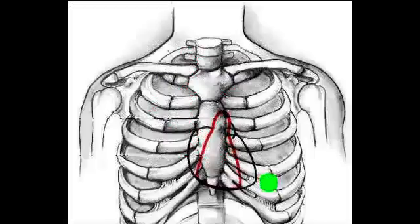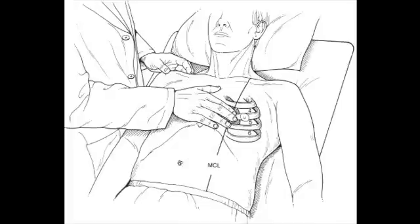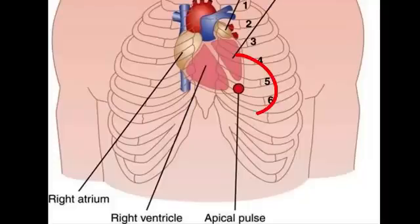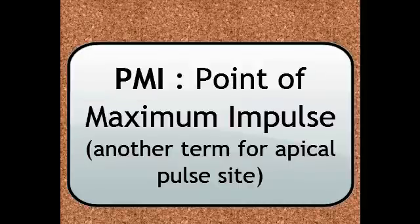The apex lays at about the fifth intercostal space. When you did vital signs, did you do the PMI or the apical pulse? The landmark for the apical pulse is the left midclavicular line, fifth intercostal space. What you're hearing for your apical pulse is the apex — we also call it the PMI, the point of maximal impulse. What you're hearing and sometimes palpating is the apex of the heart.